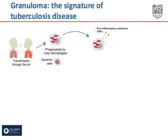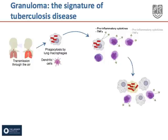The bacteria divide within the macrophages by evading the host's innate mechanisms. The macrophages release pro-inflammatory cytokines, which leads to the recruitment of mononuclear cells from nearby blood vessels. These cells release more pro-inflammatory cytokines. Uninfected macrophages arriving at the infection site phagocytose dying infected macrophages, increasing the number of infected cells.